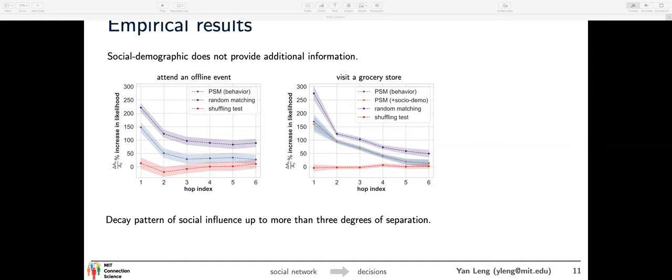In the grocery store study, we combine mobile phone data with banking transactions, giving us information about income, household size, gender of the head of household, and similar covariates. After controlling for historical mobility behaviors, social demographics do not explain any additional variation — the orange and blue lines almost overlap. This is a useful result for empirical studies using large-scale behavioral data, because on platforms where behavioral information is collected, it may be sensitive to utilize social demographics. Behavioral information can contain all relevant variation.